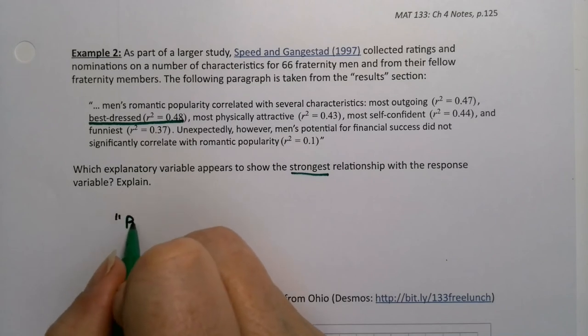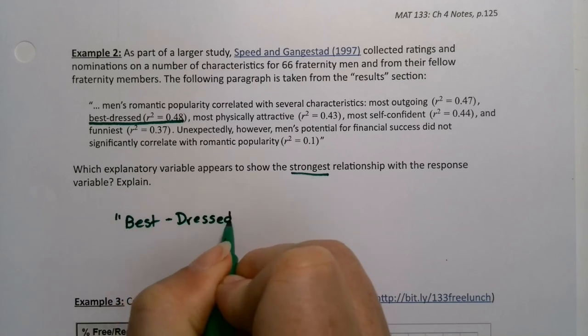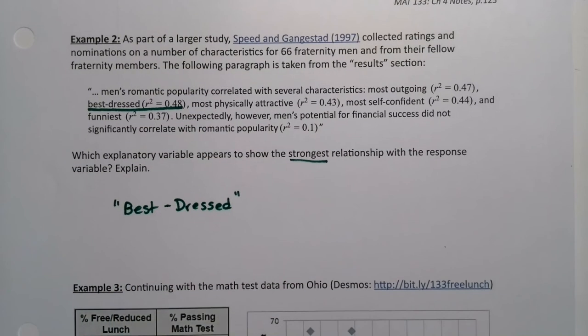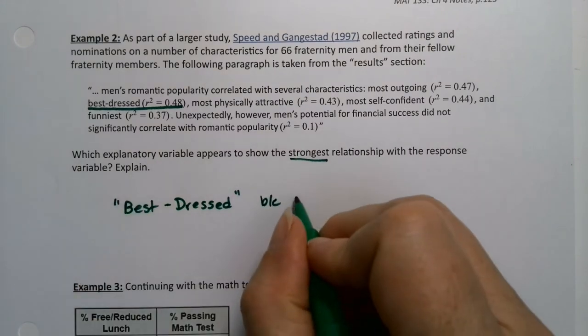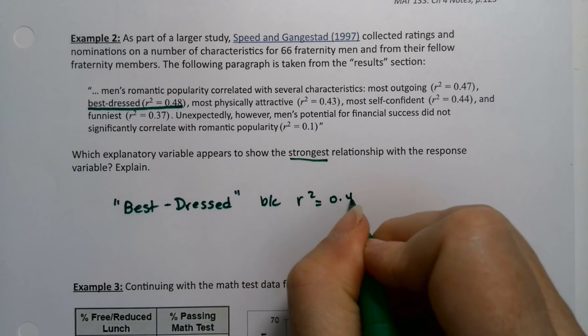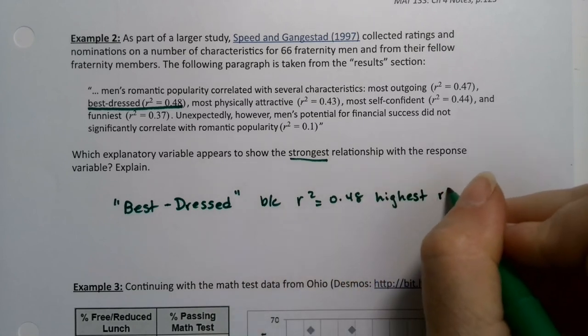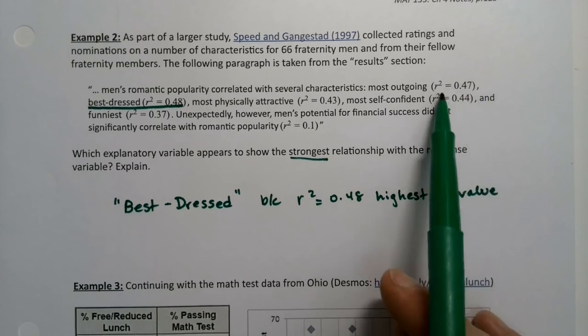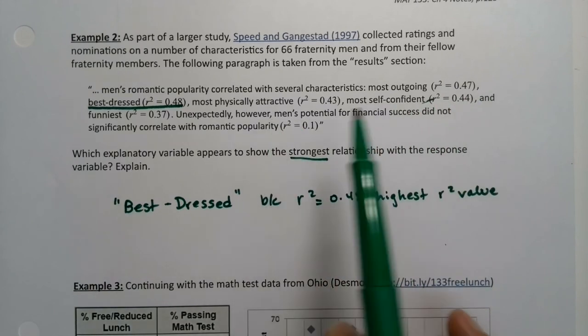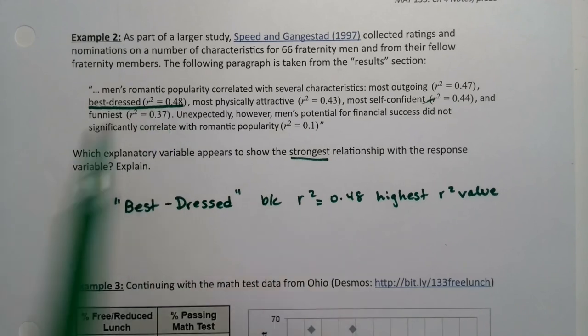So best dressed, whatever that means. I'm going to put it in quotes. It was 1997, who knows what they were dressing like. So best dressed because, now how do you know? Because the R-squared which was .48 was the highest R-squared value. That's where it's really great. It allows us to directly compare, because we don't know if any of these were positive or negative. All we know is that that one was the strongest relationship because R-squared was .48.